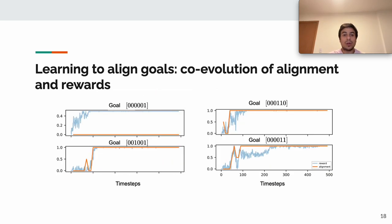In this figure, we observed that for cooperative goals, rewards and alignments are highly correlated with improvements in one driving improvements in the other, while for individual goals, rewards are maximized without requiring any alignment.